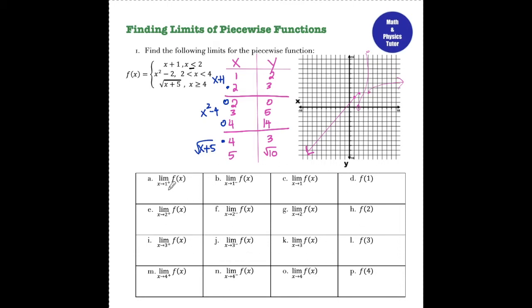Now that I have my graph I'm going to start answering the questions. First, the limit as x approaches 1 from the right of f of x — approaching x equals 1 from the right I'm right along this line, so I can plug 1 in: 1 plus 1 is 2. The limit as x approaches 1 from the left is also 2 since I'm still on the line, and the limit as x approaches 1 is 2. For f of 1, the value of the function at 1 is a point lying on x plus 1, so the answer is also 2.